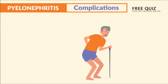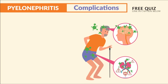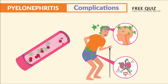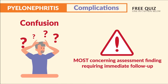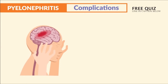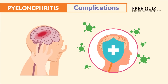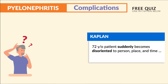A Kaplan question states a patient says, 'I can go all day without emptying my bladder.' The correct answer is this statement needs further teaching. For complications, elderly clients with UTIs can quickly develop urosepsis — infection of the blood that can affect the brain. A common manifestation is confusion, which is the most concerning assessment finding and requires immediate follow-up.